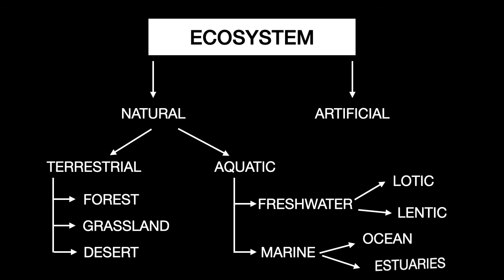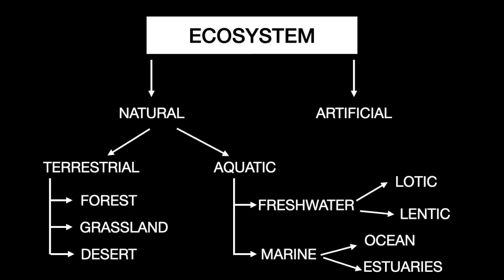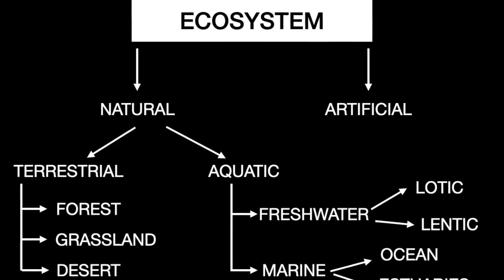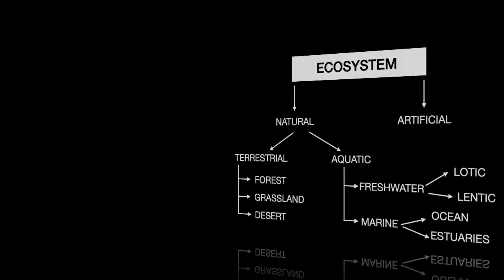The marine ecosystem can be classified into two parts: ocean and estuaries. That's all about the ecosystem. Now let's move on to the most important part of ecology — the IUCN Red List — where IUCN stands for International Union for Conservation of Nature, which was founded in 1964.